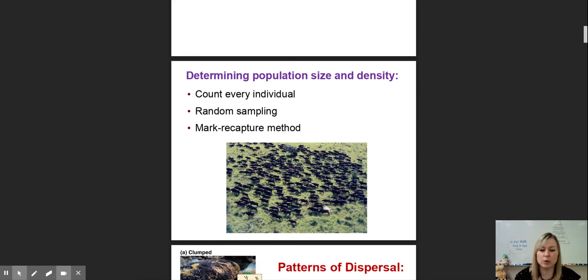Population size and density is determined by a couple different ways. You could count every single individual. That's fine if you're working with a pride of lions where the organisms are large and there's not that many. But if you're trying to count lady bugs in a field, that would be tough. So we use random sampling where you take a certain area, count how many you find, and then assume there is the same dispersion pattern elsewhere.